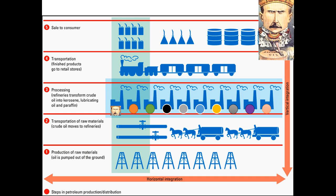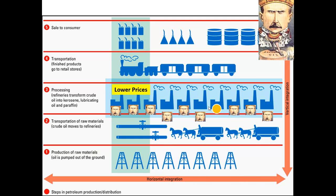Rockefeller will horizontally integrate the oil industry. He gains control of the refining process — he picks one step and completely takes control of 95% of it. So if you wanted to refine your oil in the United States, you had to come to him. At first there was competition, but Rockefeller was able to lower his prices, others couldn't compete, he'd buy their refinery, lower prices further, and slowly force out all competition until he owned 95% of the refineries.